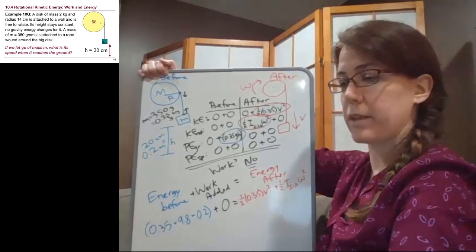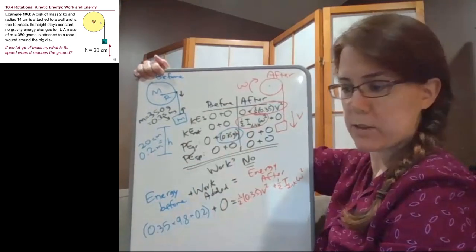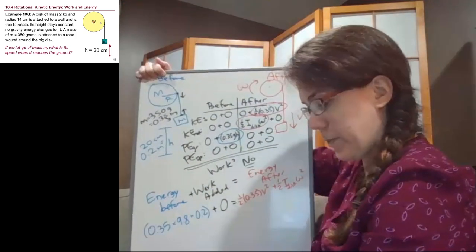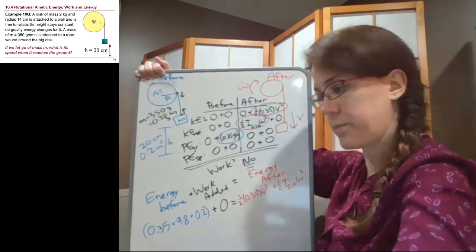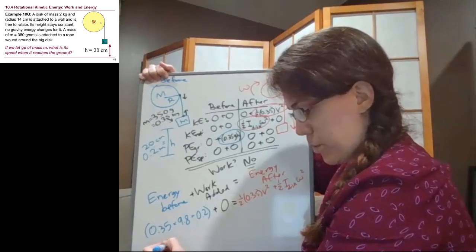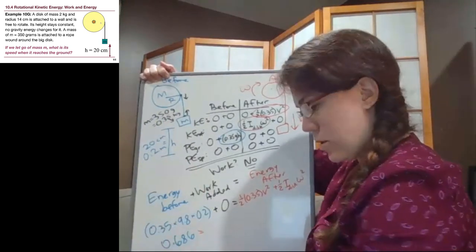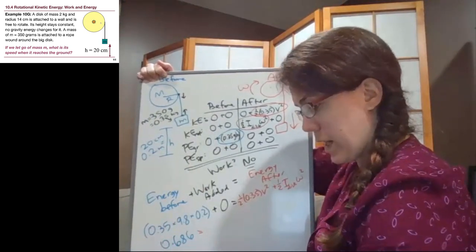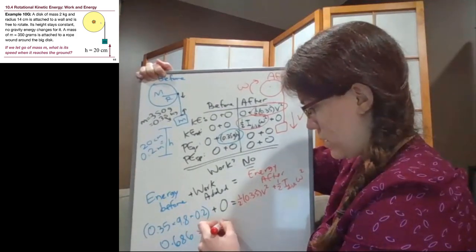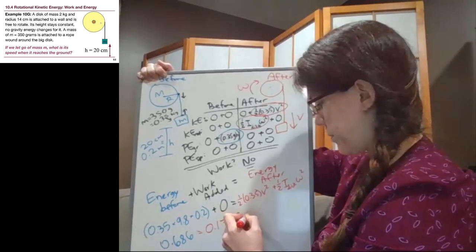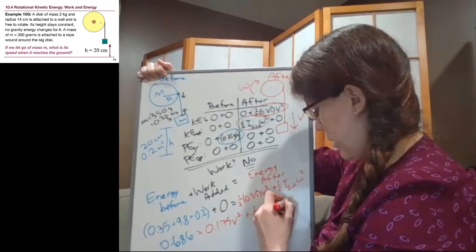Okay. So we can simplify this a little bit. A couple of things to note here. Normally I would write MGH, but because there's two masses I'm plugging the numbers in right away. And that term now has all of the numbers in it, and so we can just calculate that value is 0.686. Then 0.5 times 0.35, so one half times 0.35 is 0.175 V squared. And then it looks like we have a couple of other unknowns. It seems like we've got a problem here.